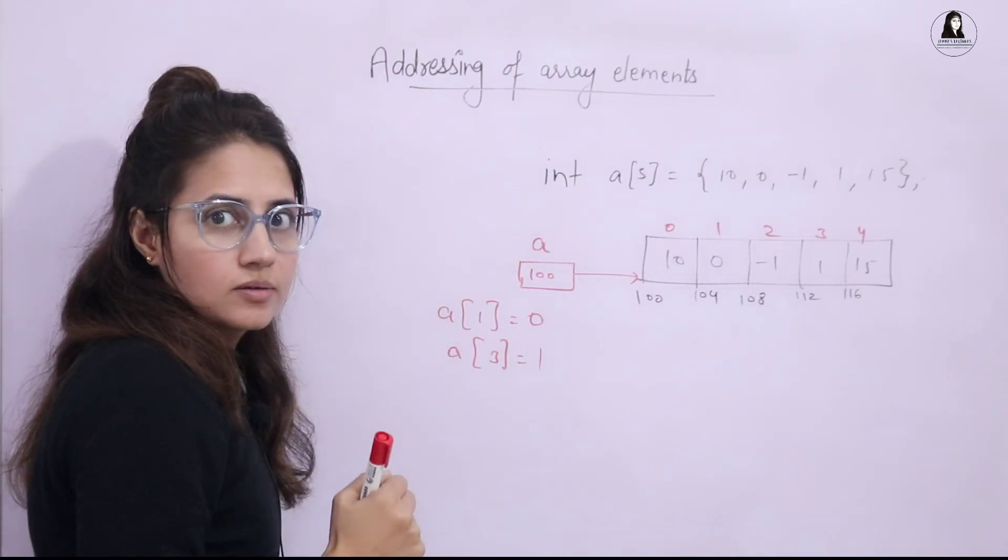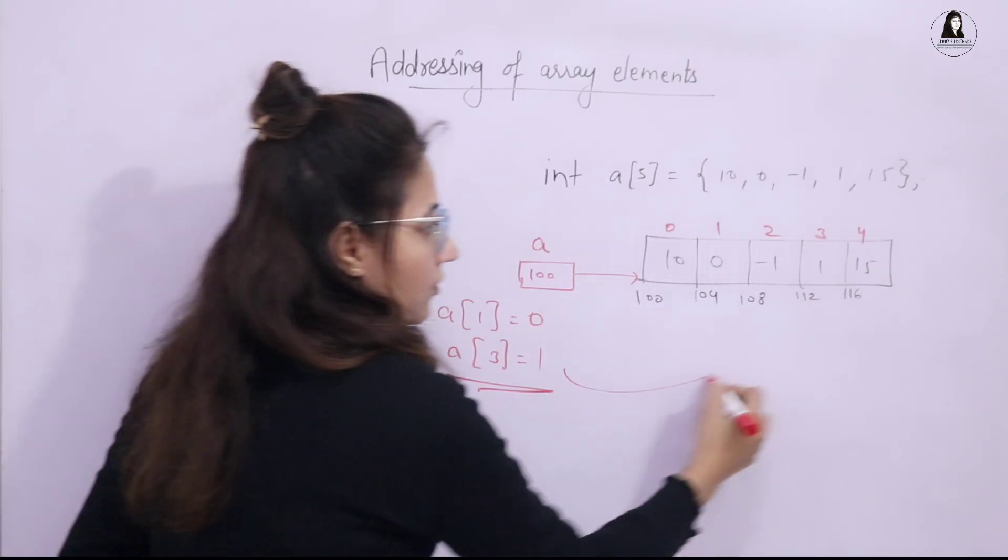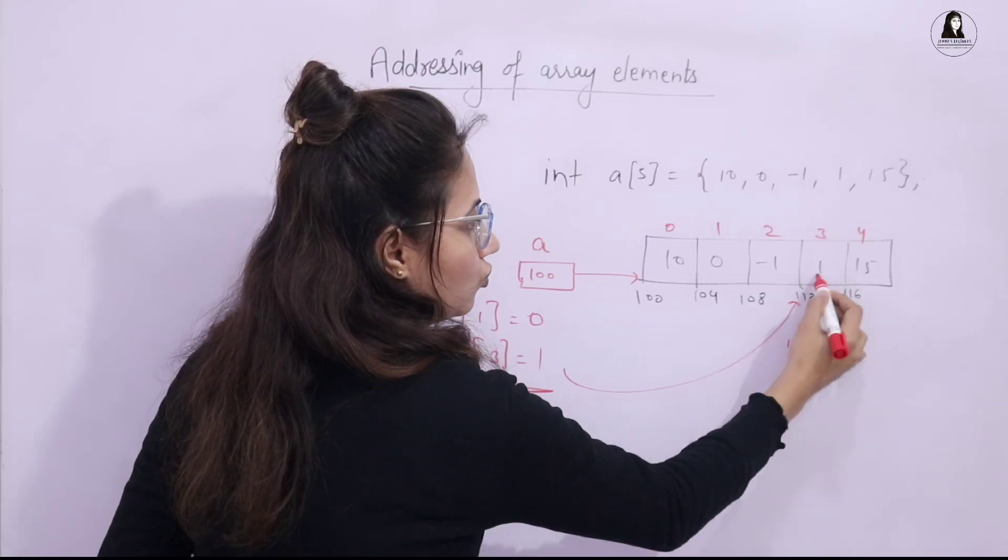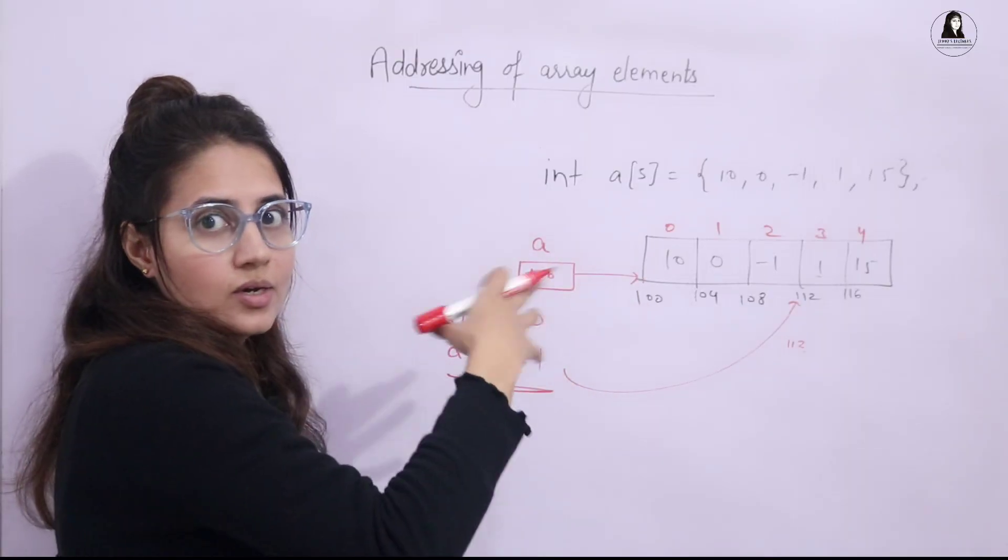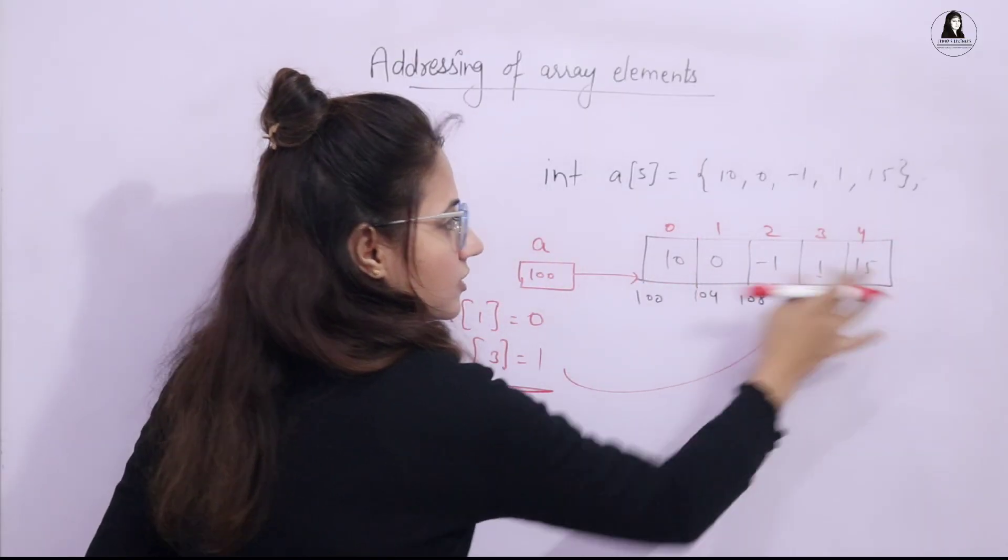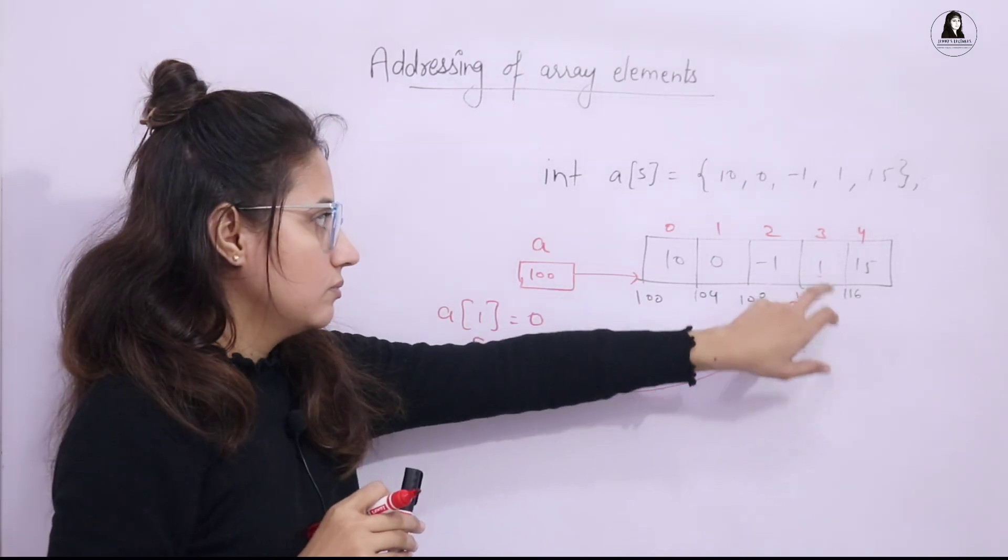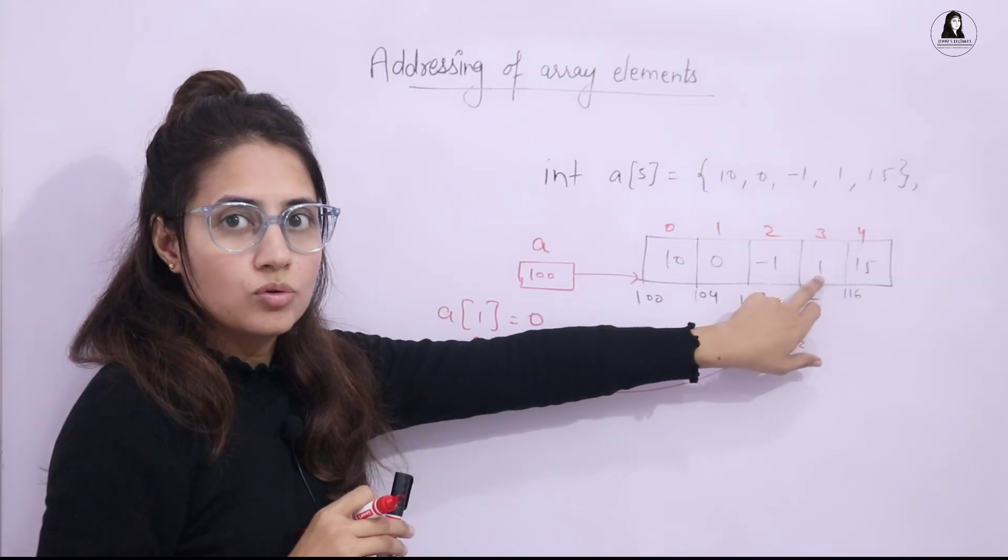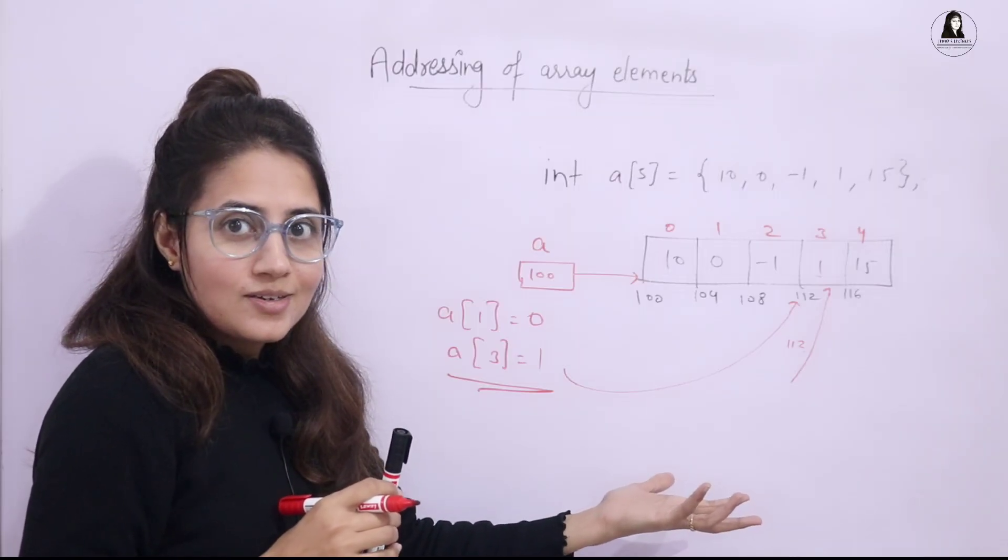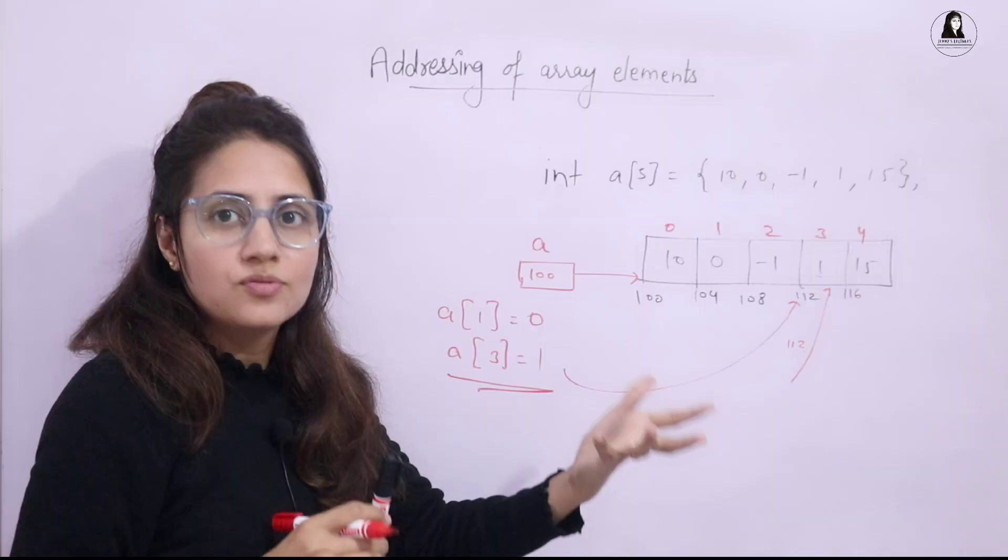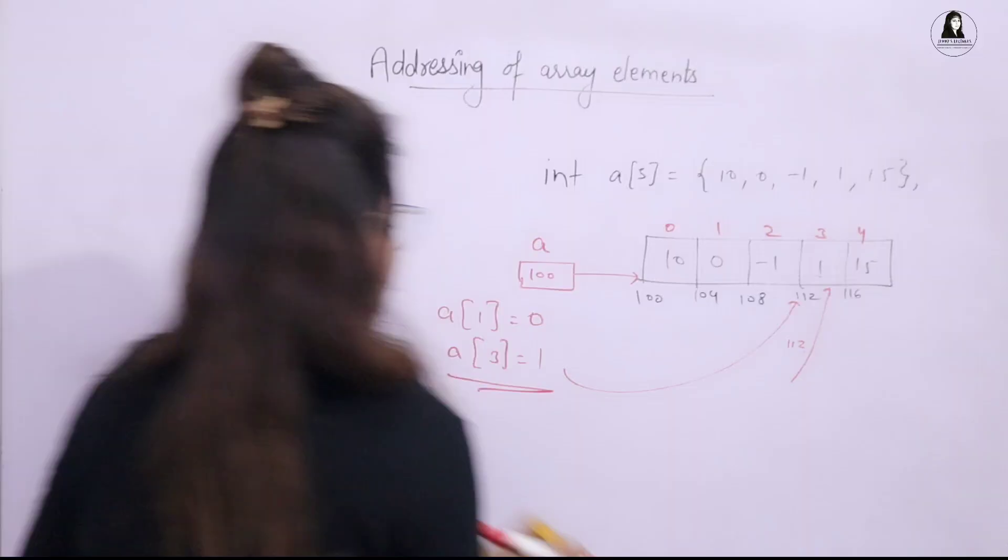But how is the address to be calculated? Obviously, when we are writing something, then there is some inner working. The address is like 112 and at 112, there is 1. So 1 is to be fetched. Suppose if you have 5 friends and your 5 friends' houses are in a line, something like this. So if I say this house is of your friend like maybe Rahul, and I say go and call Rahul, you will directly go to Rahul's house because you know the address. So how to calculate this address? What is the formula? How this addressing is to be done of array elements? So there is a simple formula. What is that?